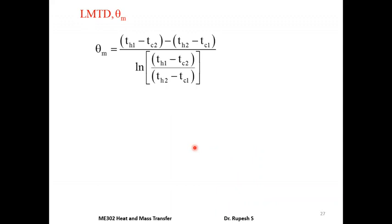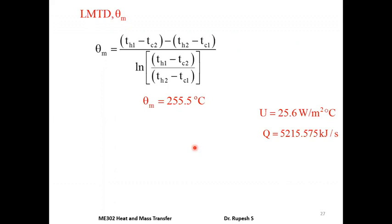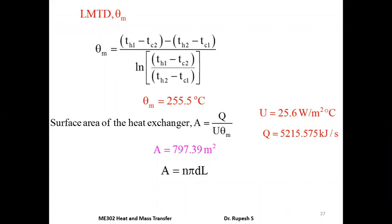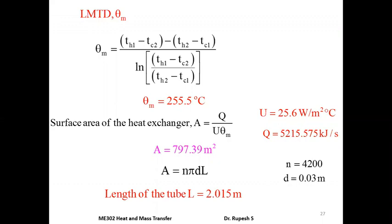LMTD for the counterflow heat exchanger: θm = [(Th1 - Tc2) - (Th2 - Tc1)] / ln[(Th1 - Tc2) / (Th2 - Tc1)]. Substituting temperature values gives θm = 255.5°C. Substituting q, U, and θm into A = q / (U × θm) gives area A = 797.39 m². Substituting into A = n × π × d × L gives tube length L = 2.015 meters. Thanks for listening; we'll meet in the next section.